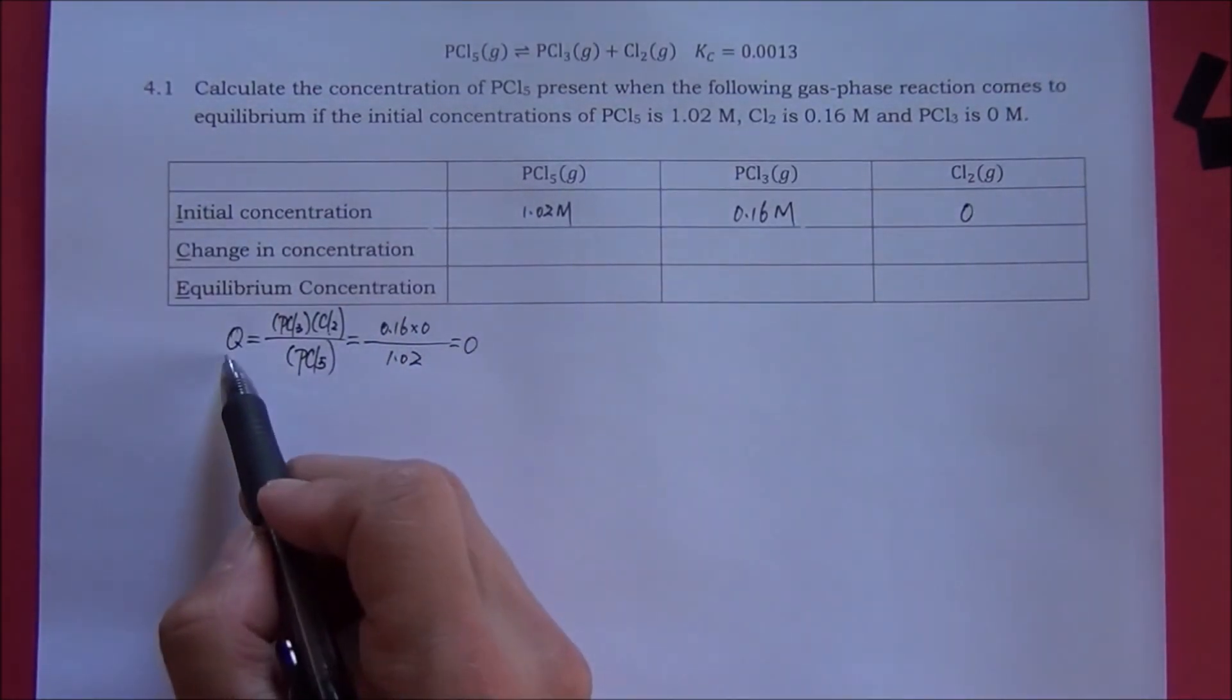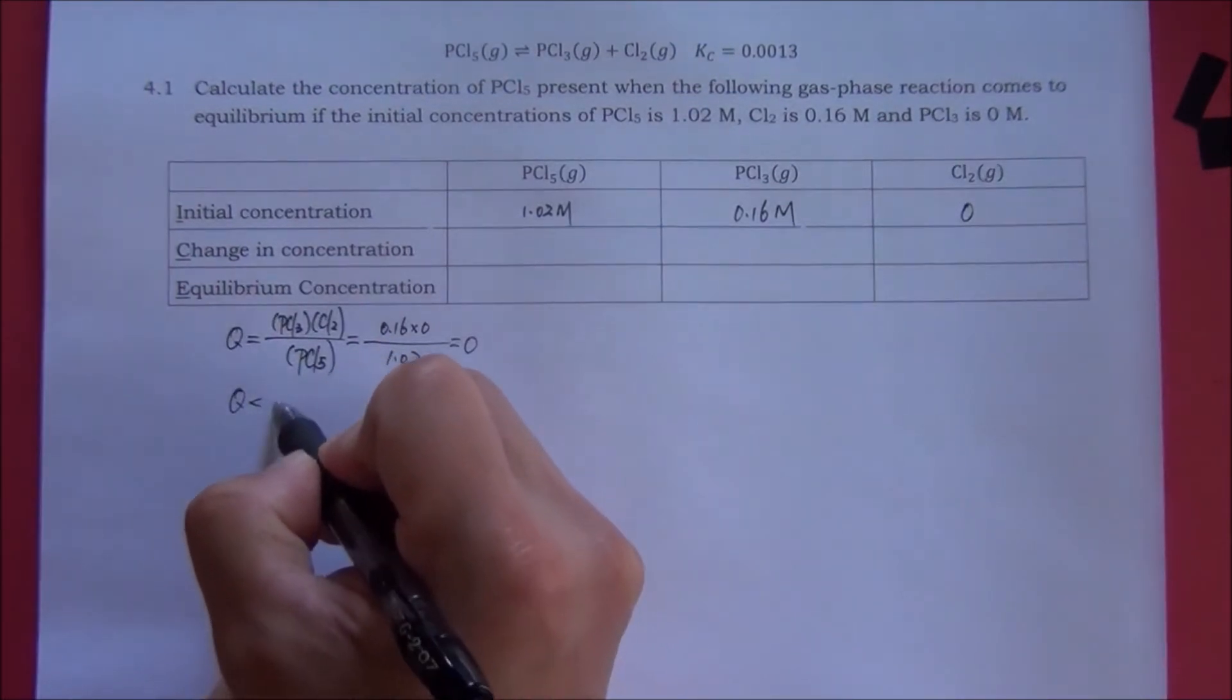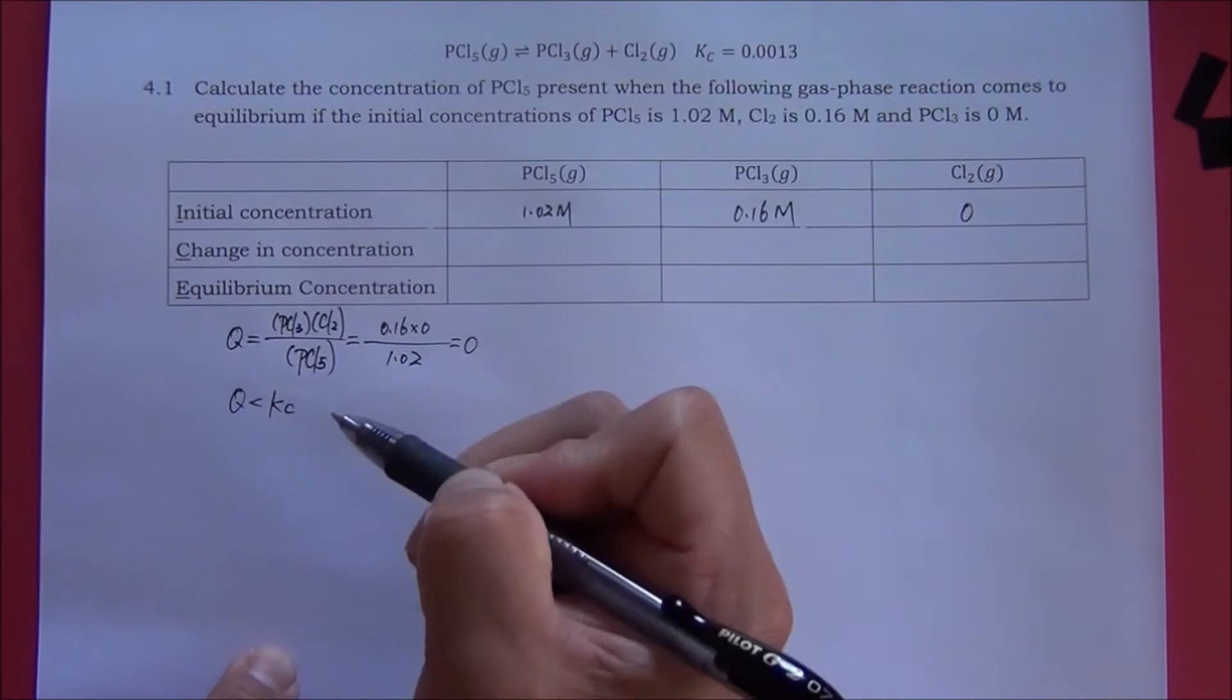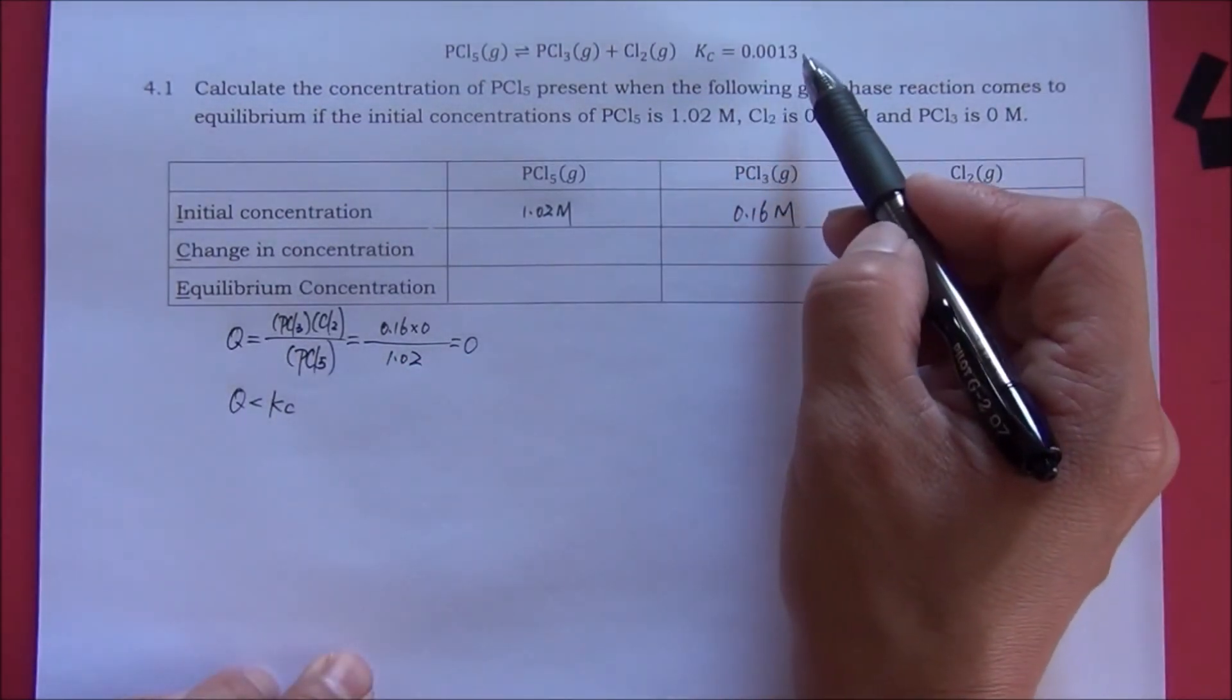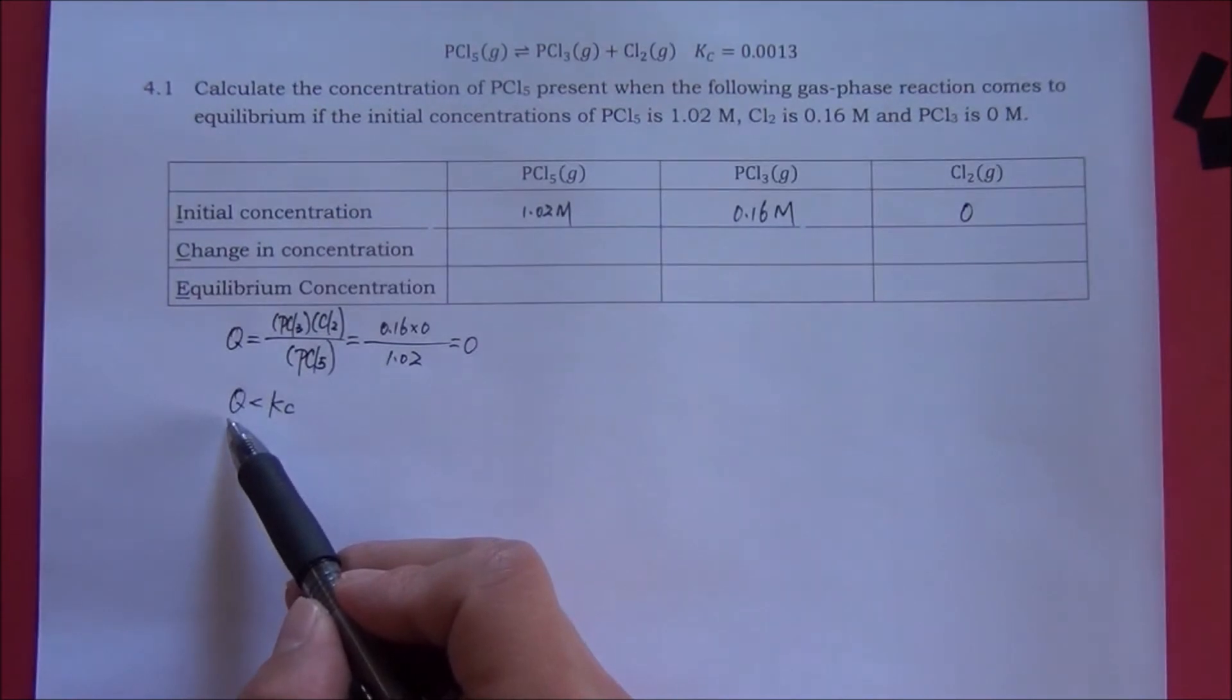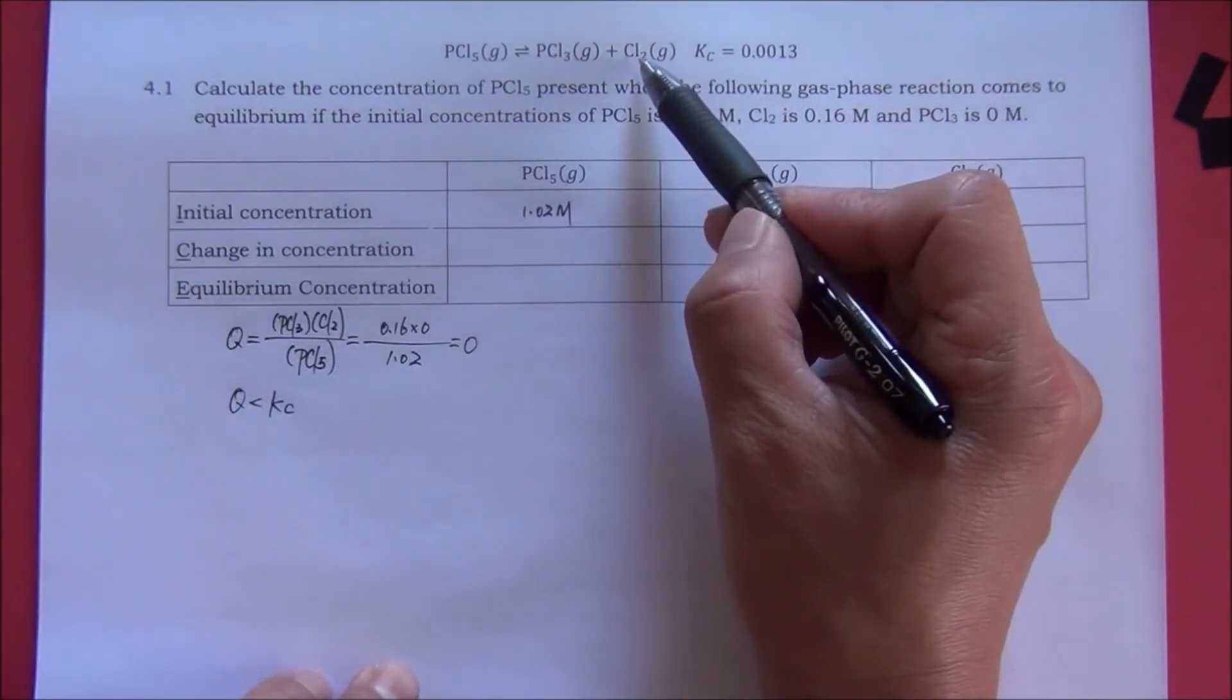The reaction quotient is equal to 0. Therefore, Q is less than Kc, because the equilibrium constant is always a positive number. When the reaction quotient is smaller than the equilibrium constant, the reaction will go towards the product.